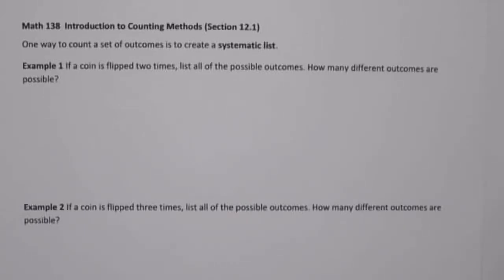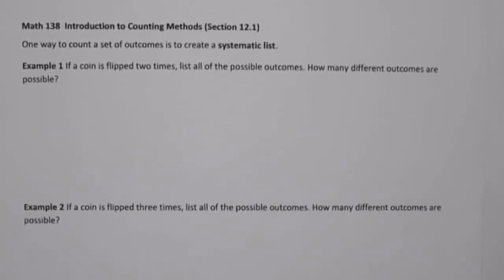We are now transitioning to our unit on counting and probability. This is going to be looking at chapters 12 and 13 in our textbook. We're going to begin with section 12.1, where we'll be looking at different ways of counting outcomes to an event.